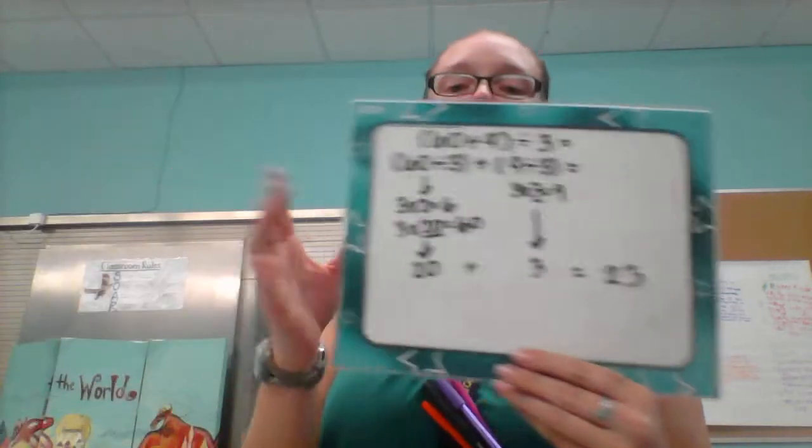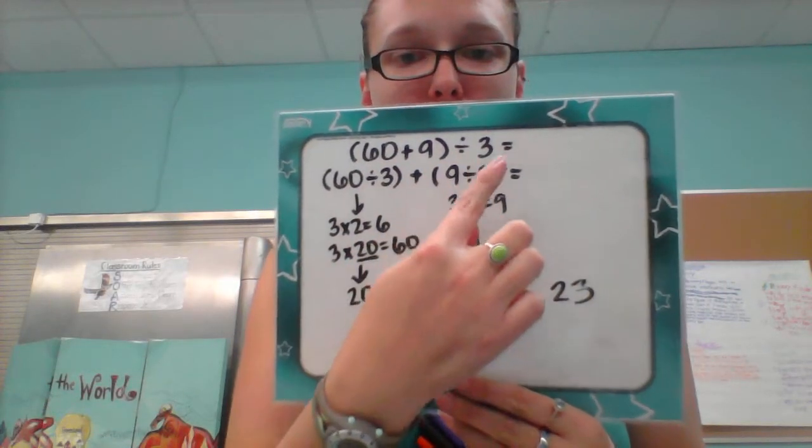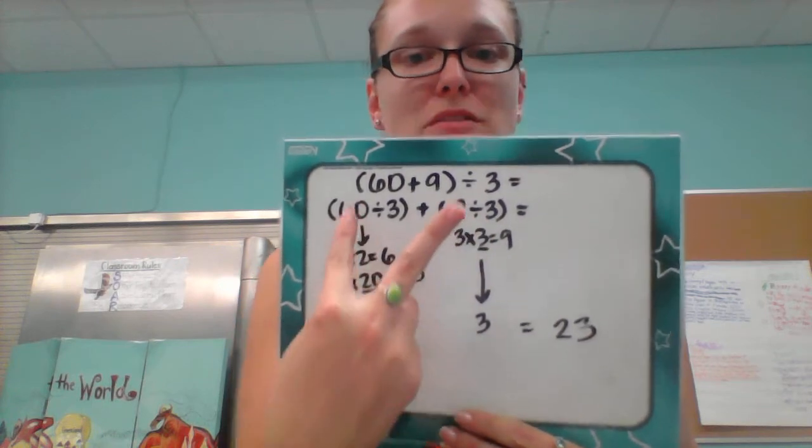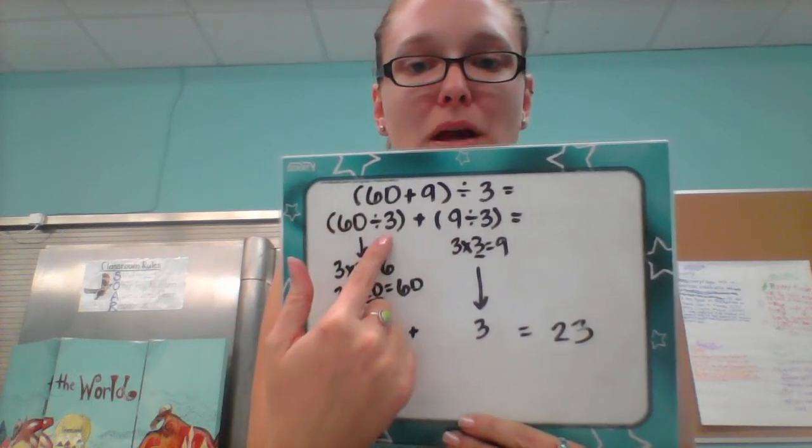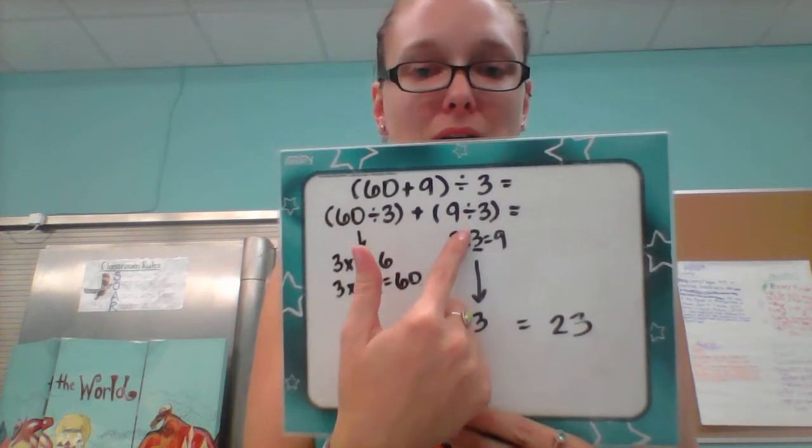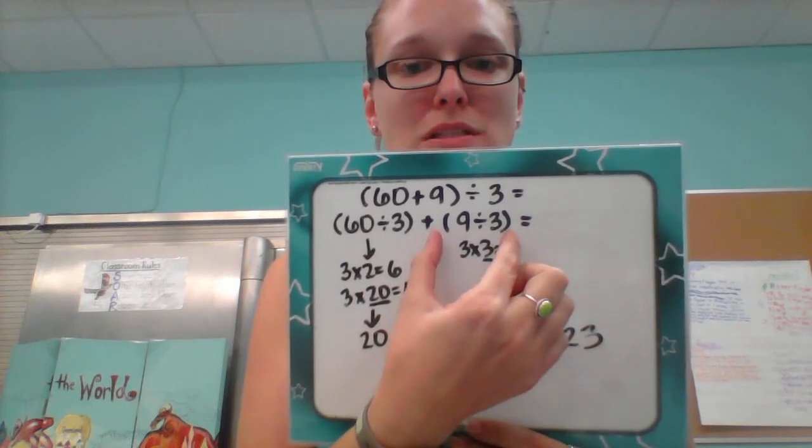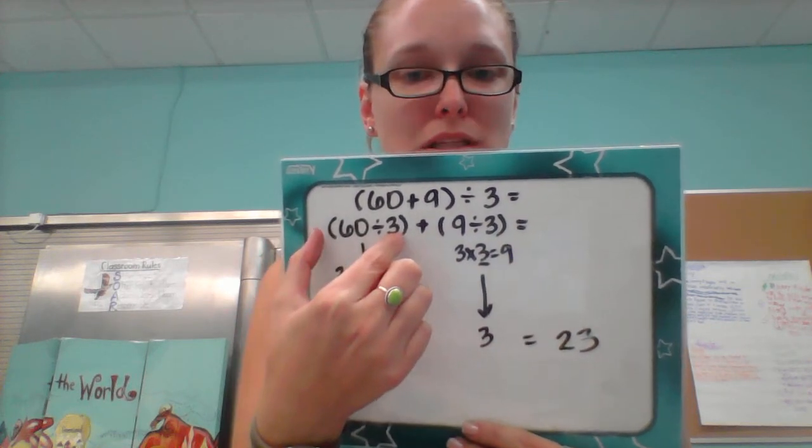The next step, you take that 60 plus 9 divided by 3 and you break it into two different division problems. You have 60 divided by 3 plus 9 divided by 3. Notice this one's in parentheses and this one's in parentheses.